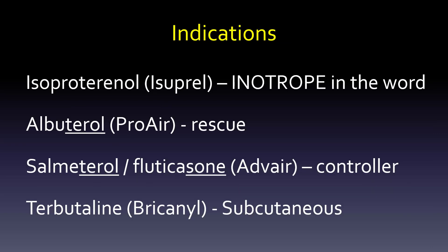Let's just start with one slide — what's it for? So indications. When you have something like isoproterenol, which is Isuprel, inotrope is in the word. This is something for shock or bradycardia, those types of things. Albuterol — we can underline the stem, the -terol stem, which lets us know it's a beta-2 agonist. That's Pro-Air. The brand name tells you what it's for — it's a rescue inhaler, providing air by bronchodilating.